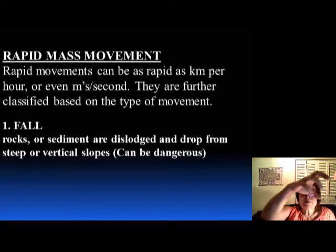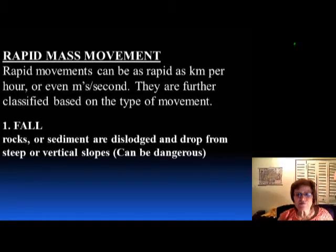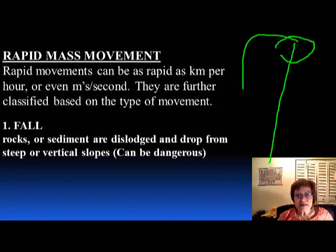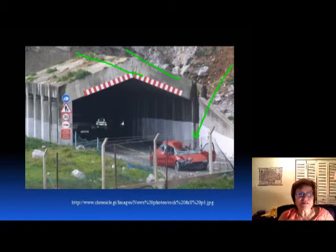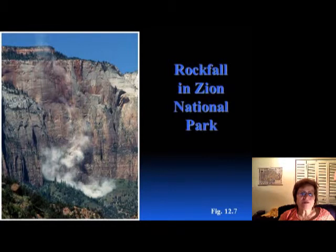The fall is when something dislodges from the rocks — the top part dislodges and falls down. That's the rock fall. It can be very, very dangerous. Look at this picture — they had a tunnel here, but then a rock fell down a bit further, so this poor person must have died. And this is an amazing rock fall in Zion National Park.